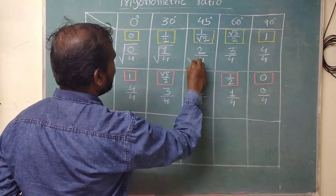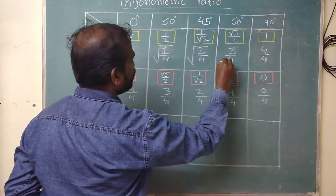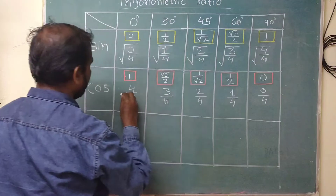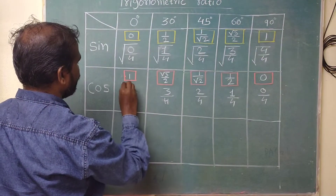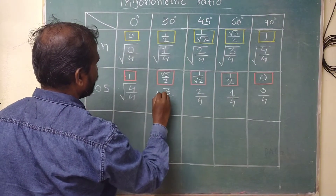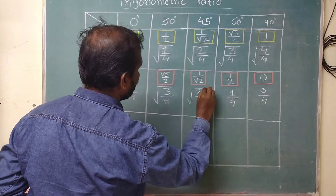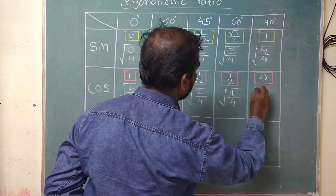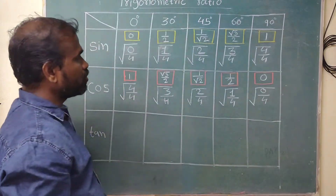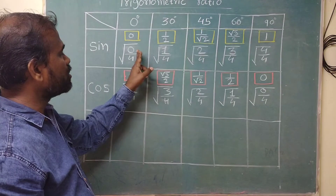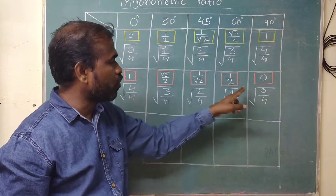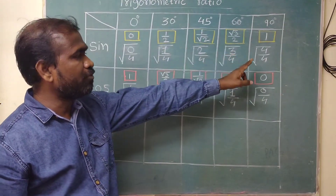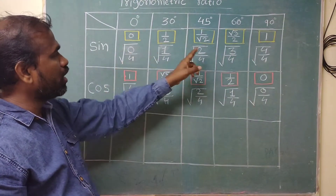Put all these numbers inside a square root. Now to repeat the process: first we wrote 0, 1, 2, 3, 4, then again 0, 1, 2, 3, 4, then we divided those numbers by 4, and now we put each ratio under the square root.